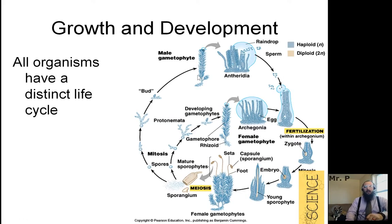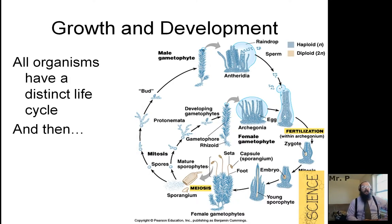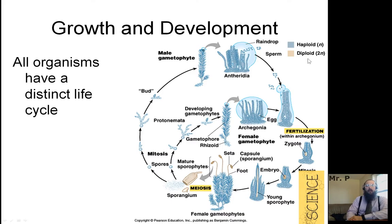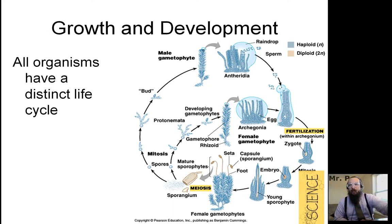Next: grow and develop. All organisms have a distinct life cycle — they don't just grow, they develop and change. Here is the life cycle for moss, which goes through two different life cycles called the alternation of generations, with a haploid and diploid version — half the DNA and all the DNA. The basic thing to know is that all living things grow, change, develop, and must also be able to die. If it's not able to die, it never really was alive — that's what we mean by a distinct life cycle.